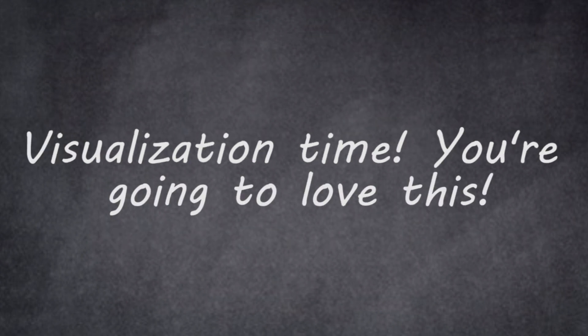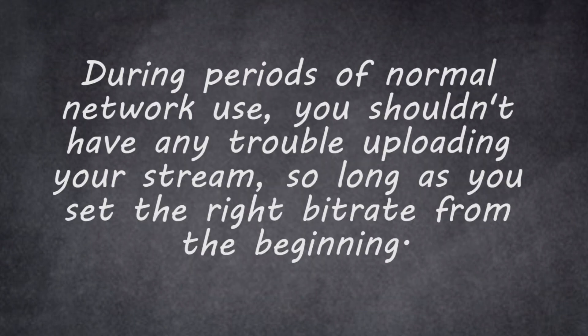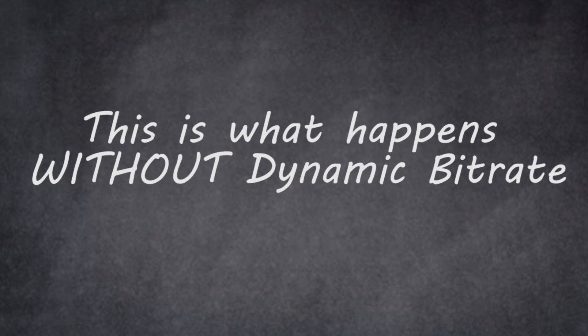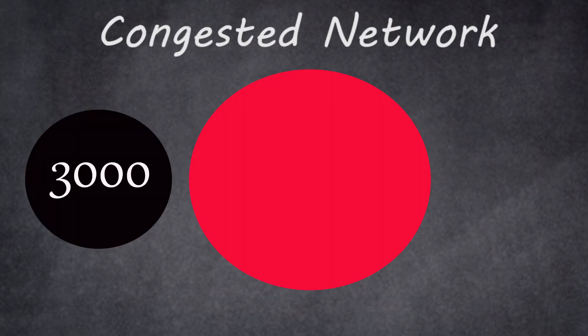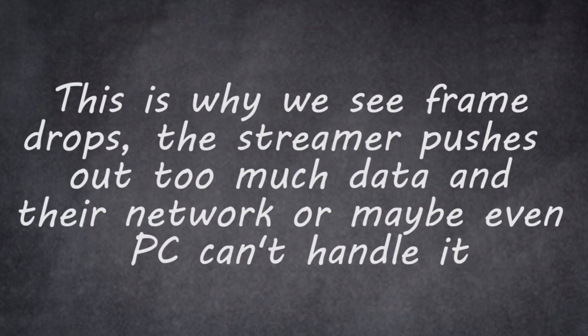Here's a visualization: think of the stream as a ball. Your bit rate is the size of that ball, and your network is the hole it needs to go through to be seen by your viewers. What makes it to the other side is what your viewers will actually see. During periods of normal network use, your ball fits through the hole no problem. Without dynamic bit rate, during periods of network congestion, that hole becomes small — and let's pretend it's razor sharp — so the data gets cut off into bits and pieces. This is why viewers experience lag and frame drops: the streamer is pushing more data than their network can handle.